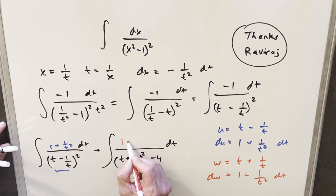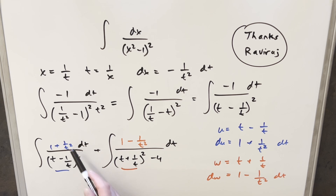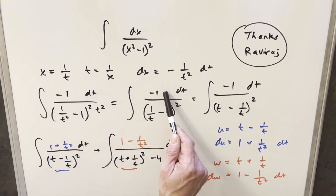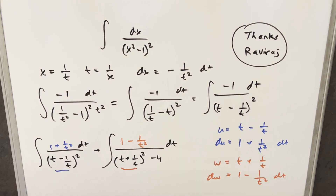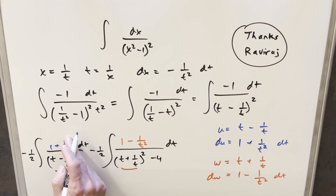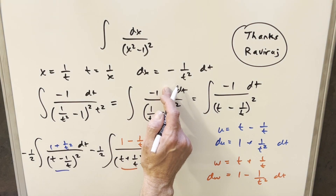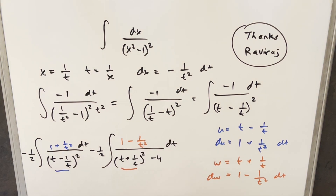Some people might wonder: how do you just make the numerator whatever you want? Well, the way we have this now, the 1/t squared and minus 1/t squared will cancel when we add the numerators, and the 1s add up to 2 — but we want minus 1. The fix: multiply the first integral by minus 1/2 and the second by minus 1/2. Now the 1/t squared terms still cancel, and minus 1/2 plus minus 1/2 gives minus 1. The denominators are unchanged, so we've set it up exactly as needed.